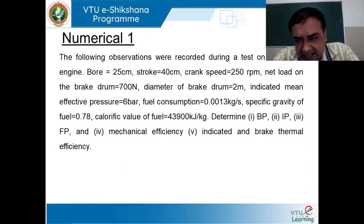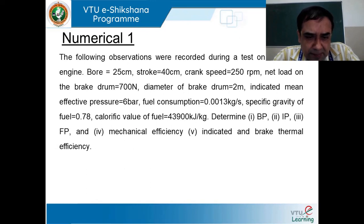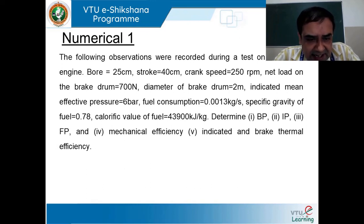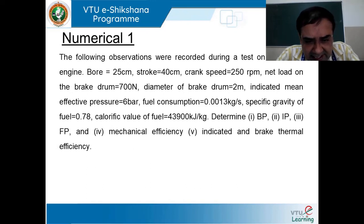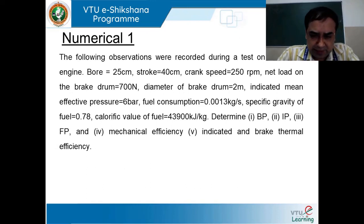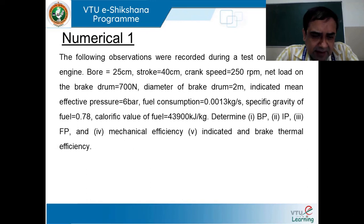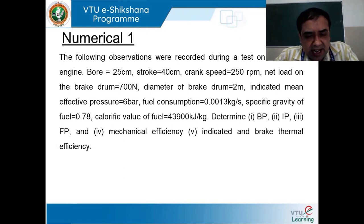Stroke or piston length: 40 centimeters. Crank speed or engine speed: 250 revolutions per minute. Net load on brake drum: 700 Newton. Diameter of brake drum: 2 meters. Indicated mean effective pressure: 6 bar. Fuel consumption: 0.0013 kg per second. Specific gravity of fuel: 0.78. Calorific value of fuel: 43,900 kilojoules per kg. Determine: brake power, indicated power, friction power, mechanical efficiency, and indicated and brake thermal efficiency.